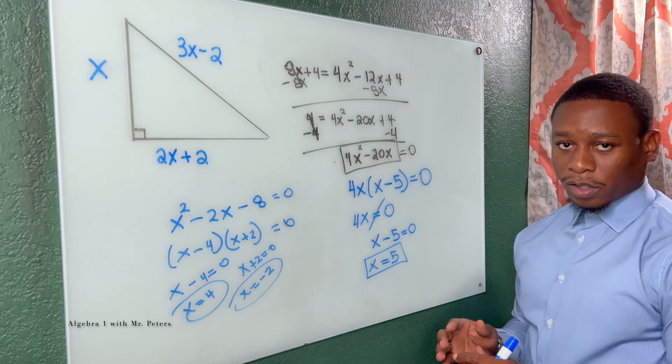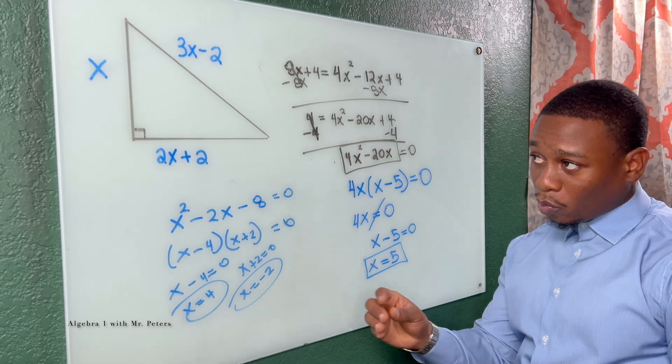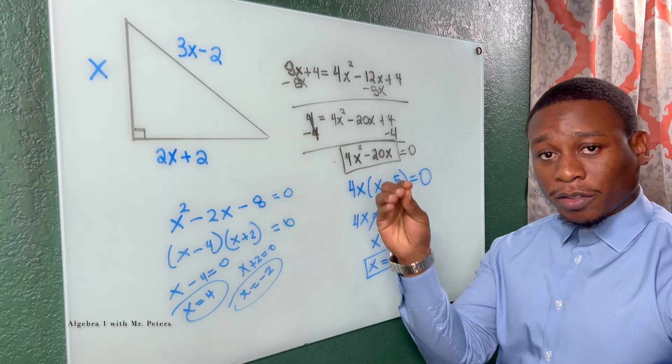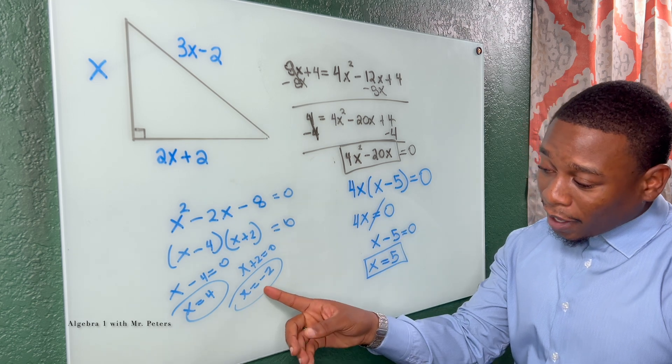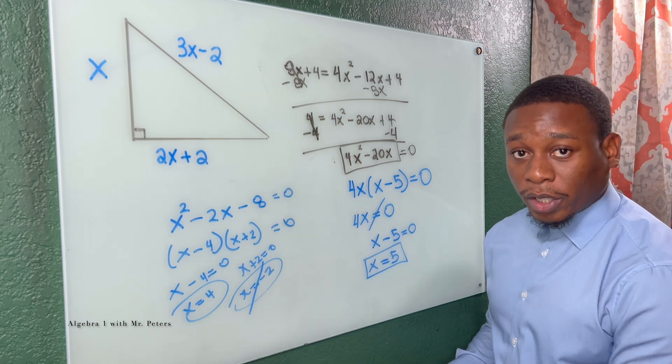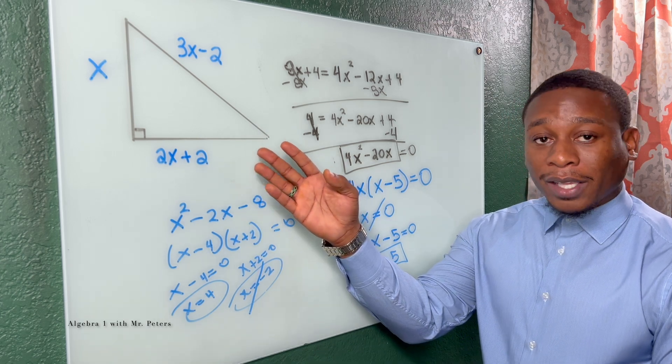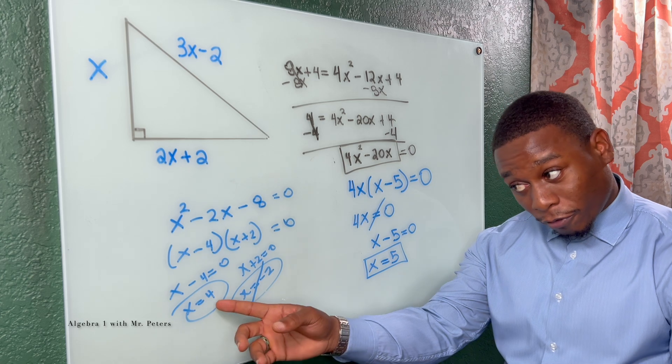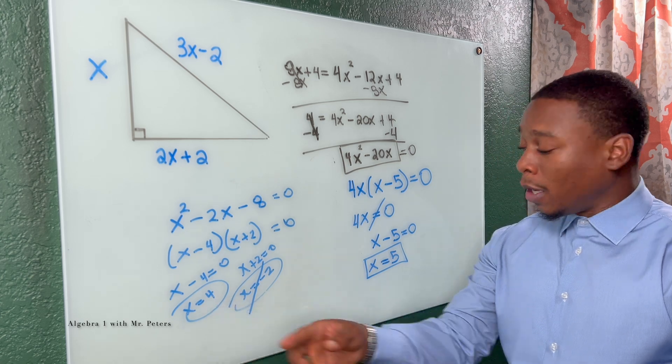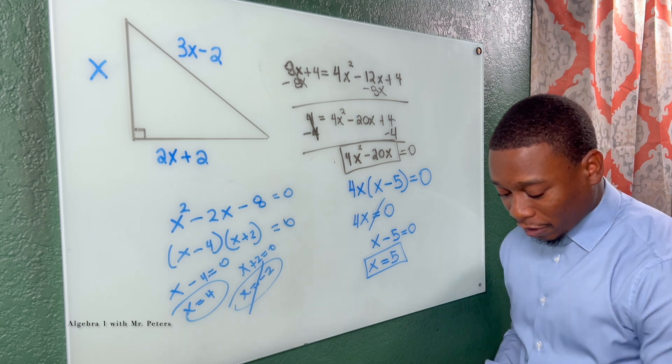Why did Mr. Peters bring this up? Because when we're dealing with the side length of triangles, X is equal to negative 2, this would be an extraneous solution because we can't have a side length be negative. So we'd have to focus on the positive side length. Didn't happen in this problem, but if it does happen, please be mindful.